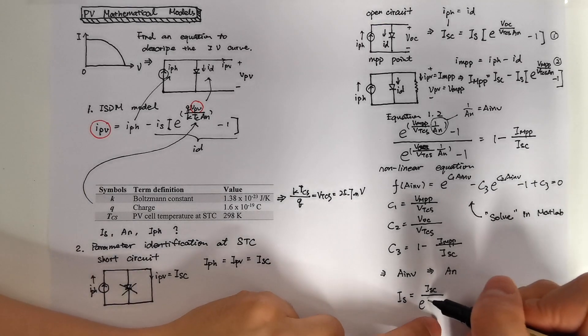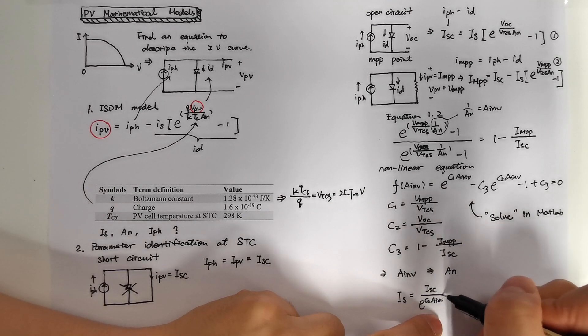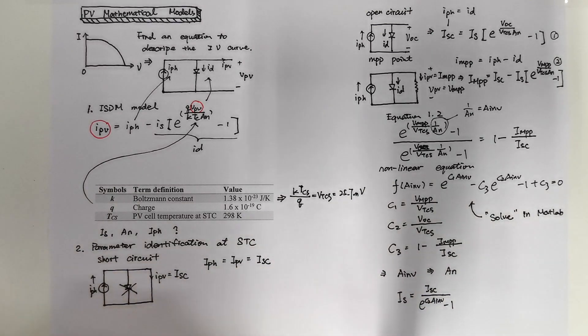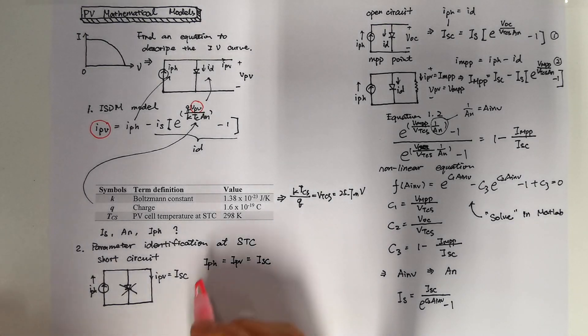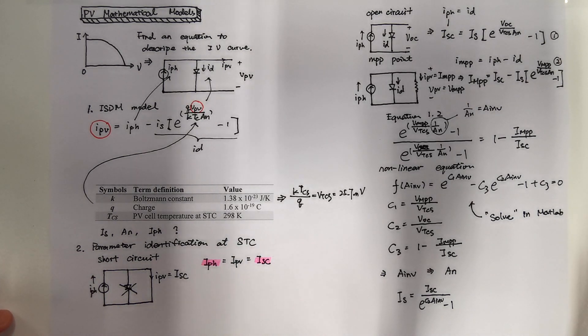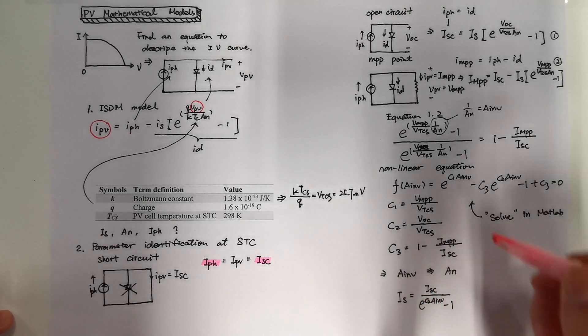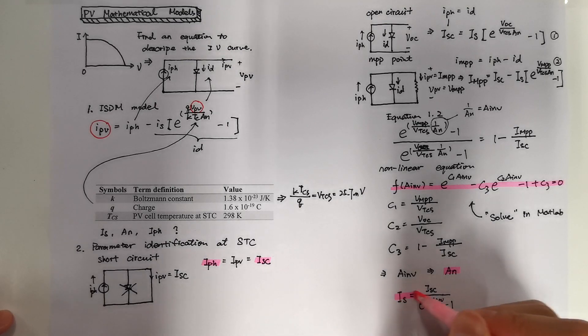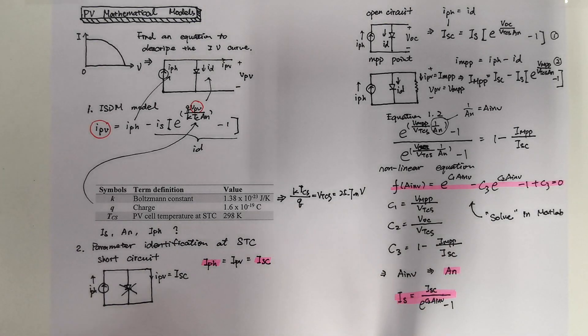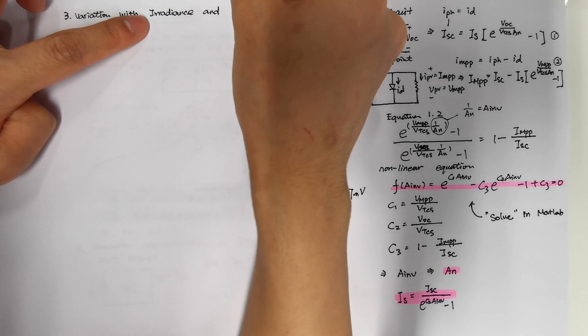And by putting all the already known value into IS equals to ISC divided by e to the power of C2 times AN inverse minus 1, we can get the IS value. So till now we know that our IPH equals to short circuit current. And by solving the function of AN inverse, we can get the value of AN. And by replacing the AN value in the IS equation, we know the IS value.